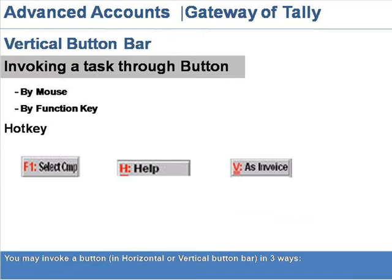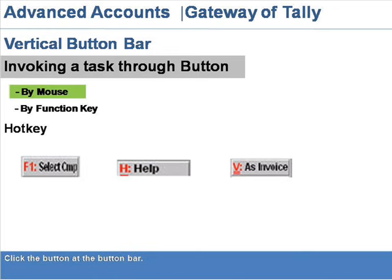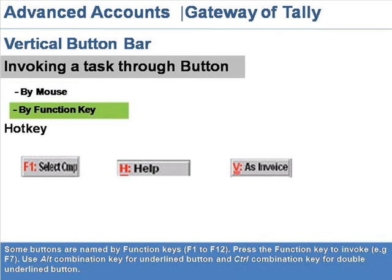You may invoke a button in the horizontal or vertical button bar in three ways. By mouse: click the button at the button bar. By function key: some buttons are named by function key, for example F1 to F12. Press the function key to invoke.